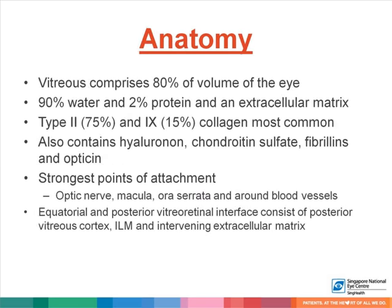The vitreous comprises 80% of the volume of the eye and consists mostly of water. Type II and type IX collagen are the most common in the vitreous, and it contains other proteins such as hyaluronan, chondroitin sulfate, fibrillins, and optisin. The strongest points of attachment of the vitreous are at the optic nerve, macula, ora serrata, and around the blood vessels.